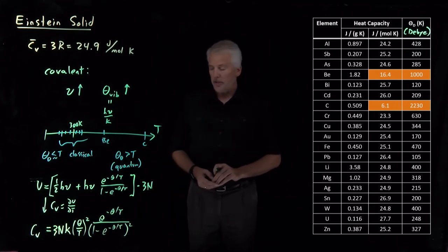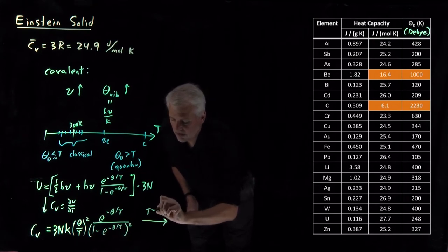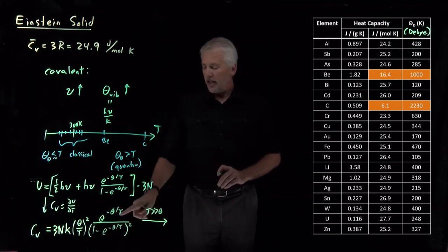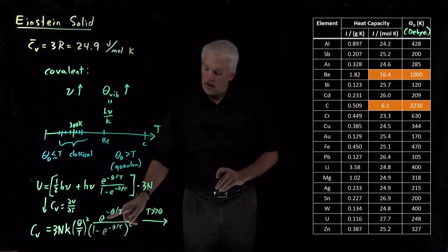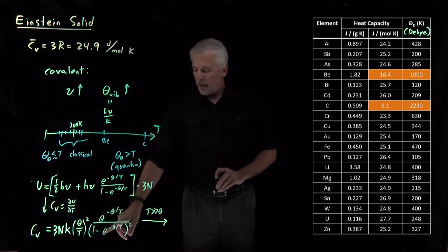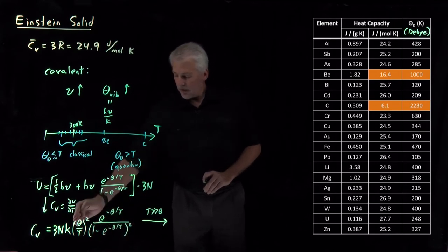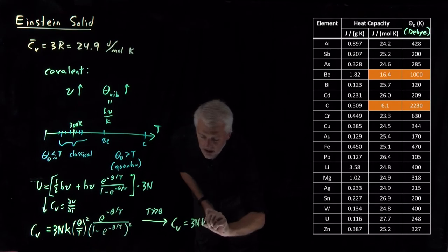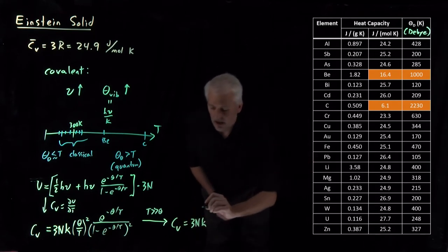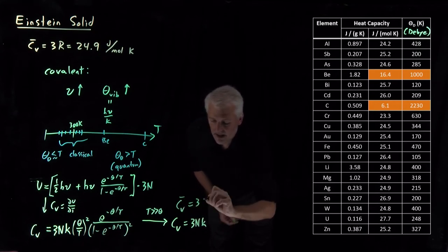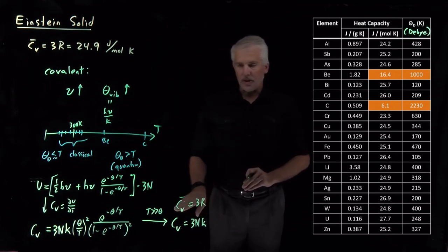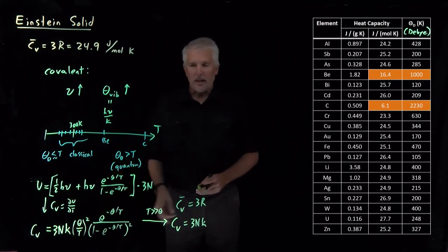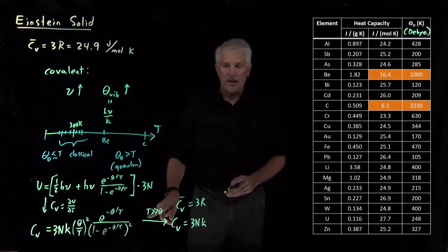There are two things to point out about this result. First, if I take the limit where temperature becomes much larger than the vibrational temperature and let the exponential get very close to 1, everything from the (θ/T)² term onward equals 1 in this approximation. The heat capacity simplifies to just 3Nk, or the molar heat capacity becomes 3R — the Equipartition limit, the Dulong and Petit result.